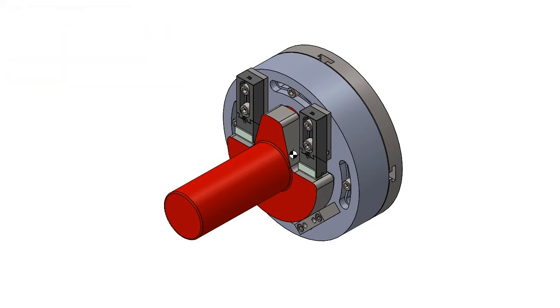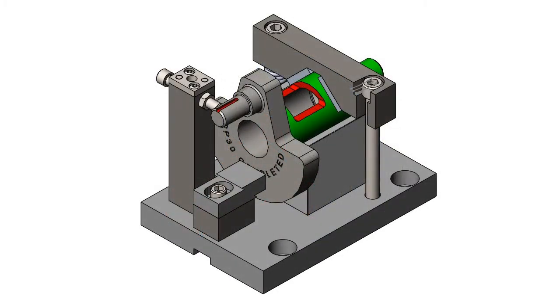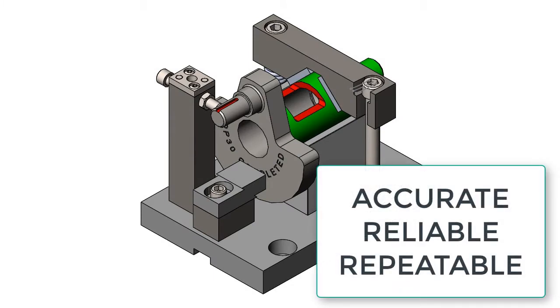Well designed jigs and fixtures require not only a basic understanding of machining, but also geometric dimensioning and tolerancing. Jigs and fixtures must securely, accurately, reliably, and repeatedly locate the part for the required machining operations.